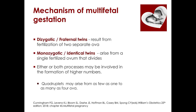We have two kinds of twinning: the dizygotic or fraternal twins, which result from fertilization of two separate ova, and the monozygotic or identical twins, which arise from a single fertilized ovum that divides. Either or both processes may be involved in the formation of higher numbers.